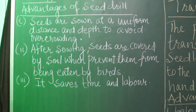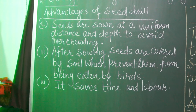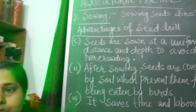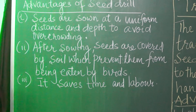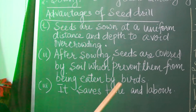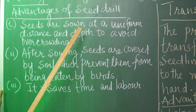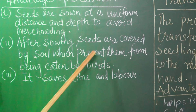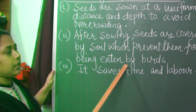The seeds should be sown at the right depth in the soil. If the seeds are just spread on the surface of the soil, they will be eaten up by birds. If the seeds are sown too deep, they may not germinate because they cannot breathe at greater depth. With the help of the seed drill, the seeds are covered by soil, which prevents them from being eaten by birds.